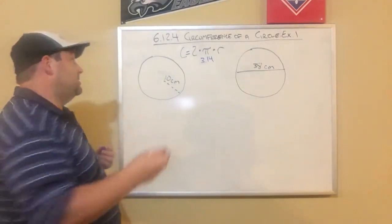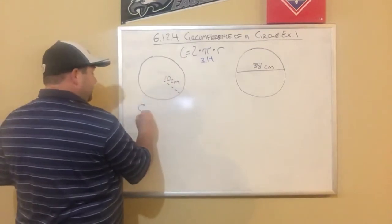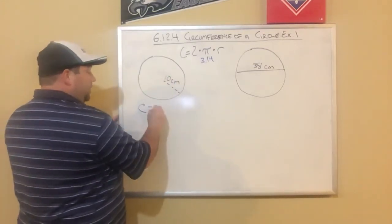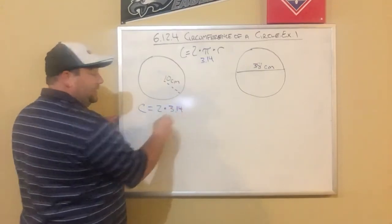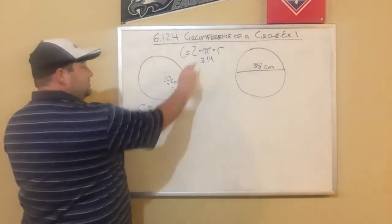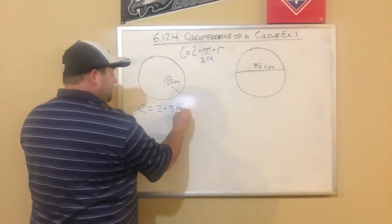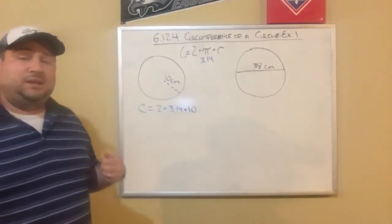And we're going to do this. So to figure out the circumference of this circle right here we're going to do 2 times 3.14. So instead of pi, I put 3.14 times our radius which is 10 centimeters.